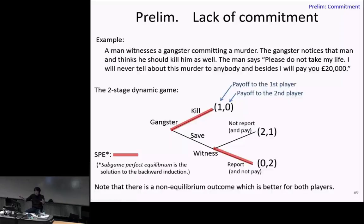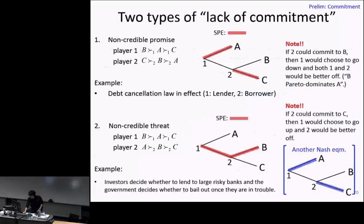Notice that this is an unfortunate scenario. The equilibrium outcome is (1, 0), but the second outcome (2, 1) actually Pareto dominates the first outcome — it is better for both the gangster and the witness. If the witness could somehow commit to keeping his promise, the gangster would be happy to save him and both would be better off. But the witness's promise is not credible, so the gangster has no choice but to kill him.